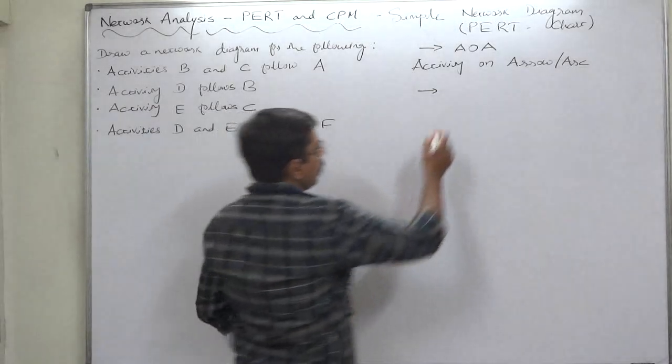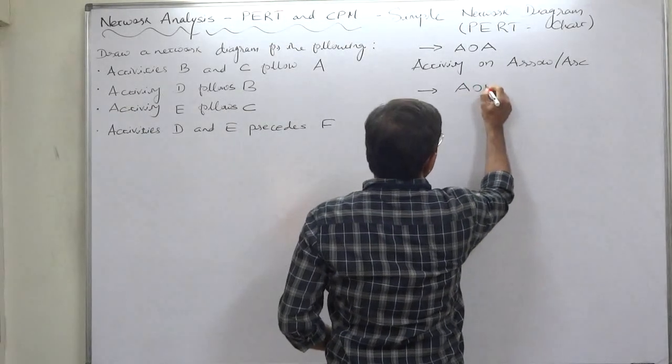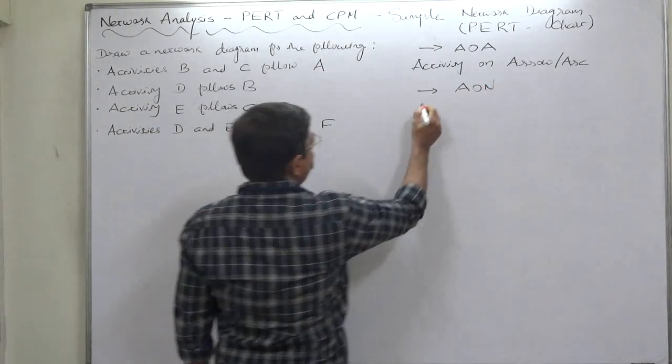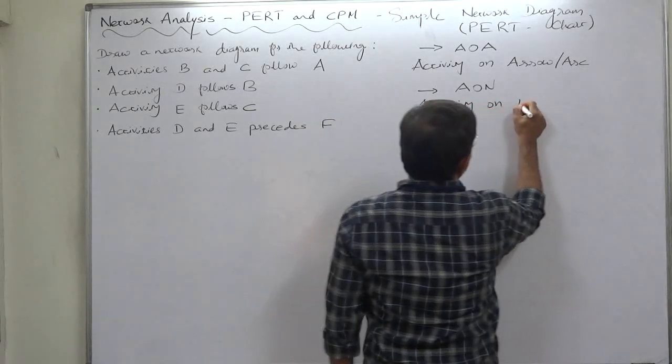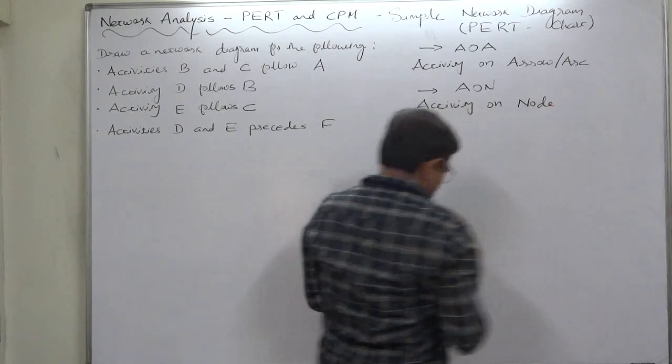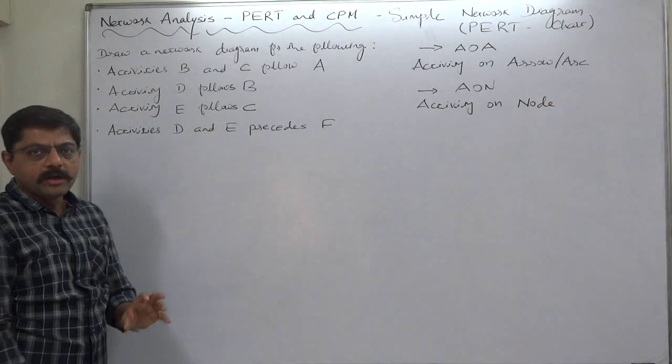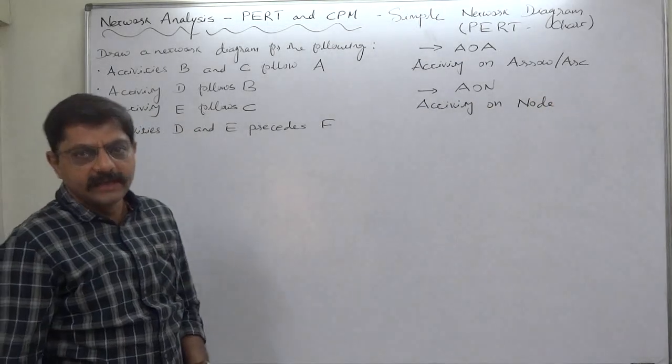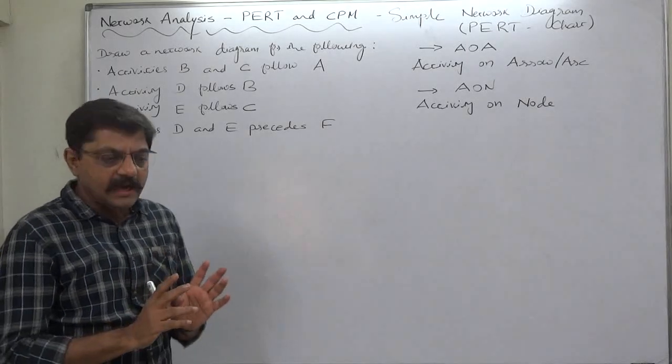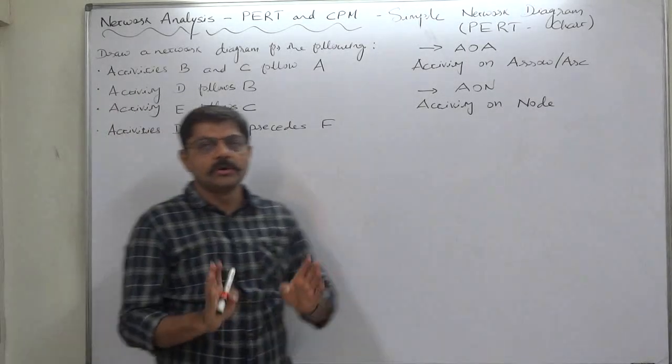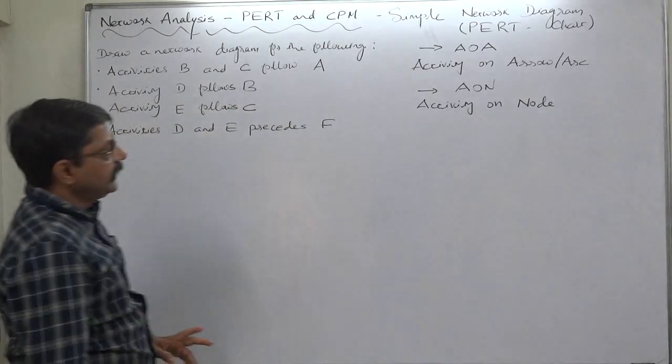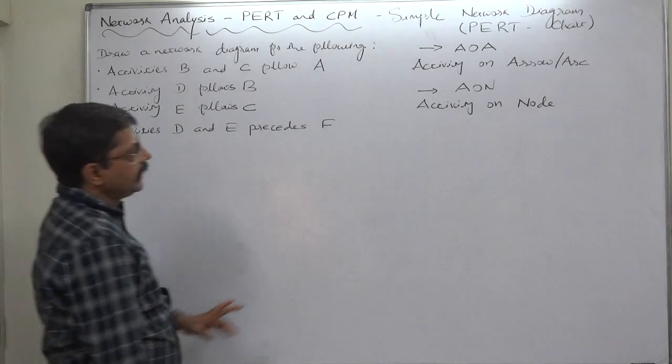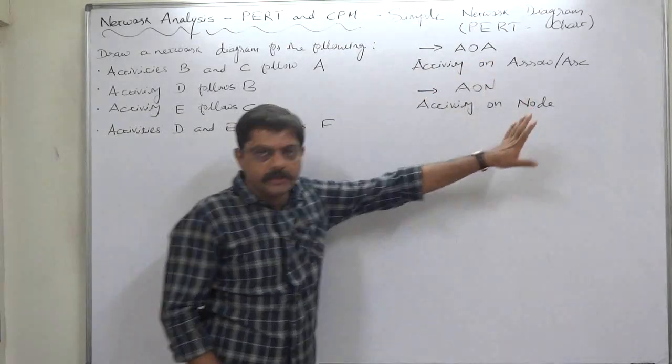Another is AON. Activity on node. Circular node is used to represent the activity. And arrows are just as bridges connecting the nodes. So, in most of the reference books I have come across, the AOA method is used.